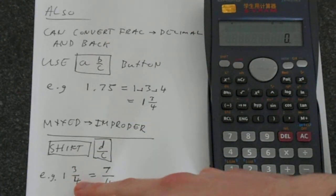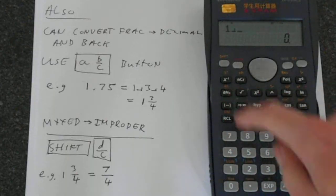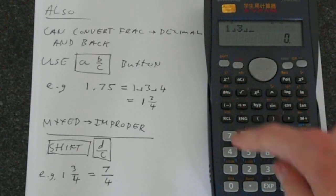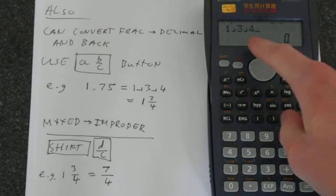For example, if you put in something like 1 and 3 quarters, this is 1, A B over C, 3, A B over C, 4. So you enter it that way.